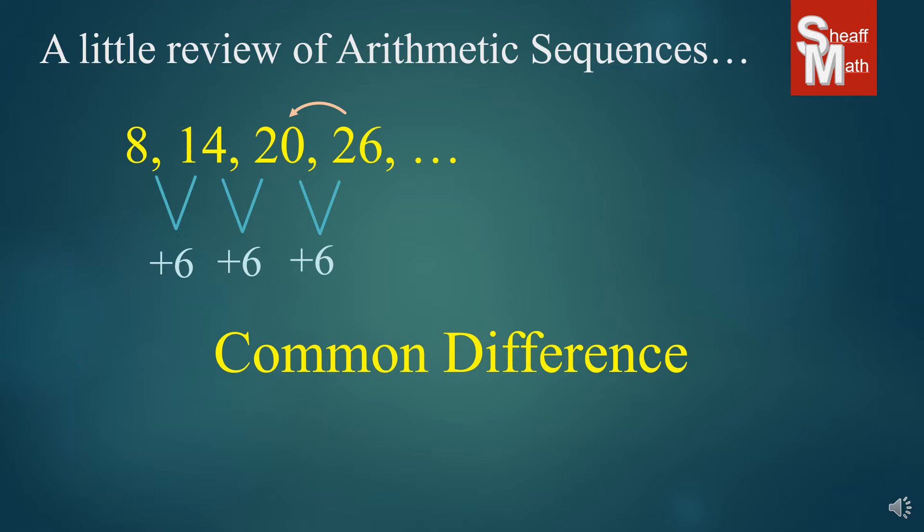Now, another thing about this common difference is that when you're speaking in linear equation terms, this is known as the slope, the rate of change that it's going up or down compared to going to the right. And so, for our sequence, we have a slope of 6.